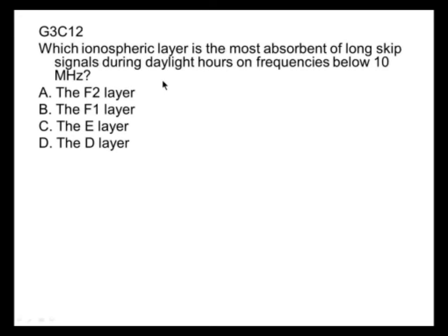Which ionospheric layer is most absorbent of long skip signals during daylight hours on frequencies below 10 MHz? The D layer. The D layer is the densest layer — as seen in the graphic — and it's the one that does the most absorbing of radio signals.